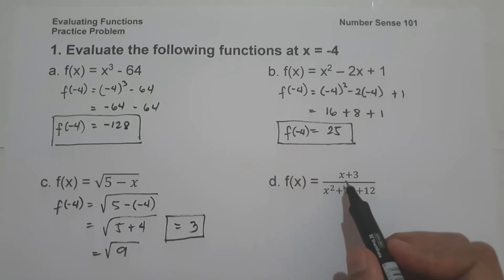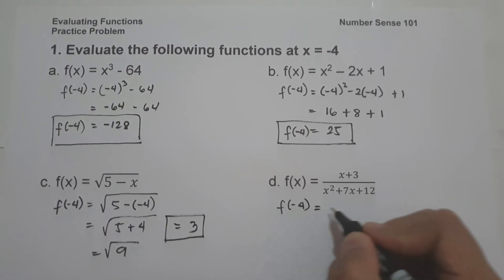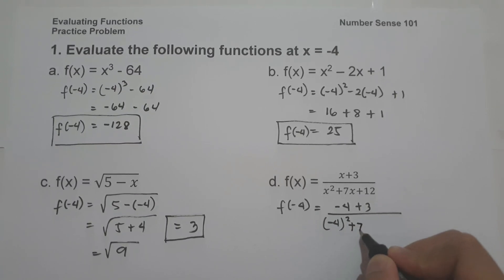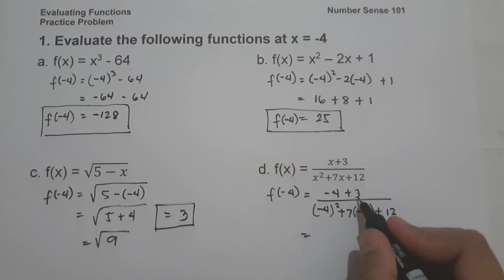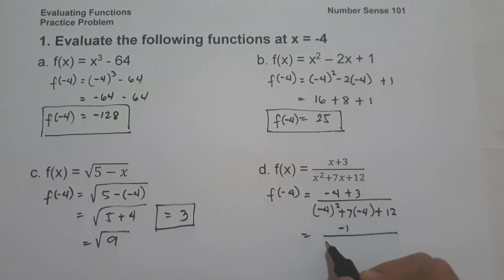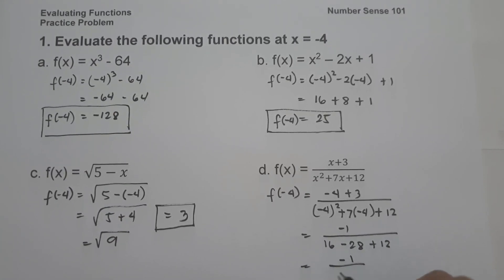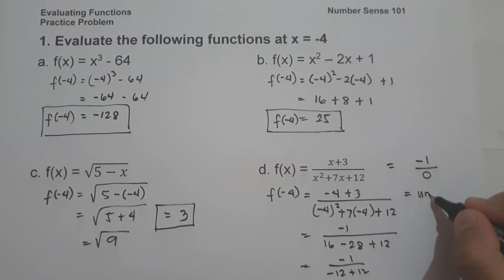On letter D, f of x is equal to x plus 3 all over x squared plus 7x plus 12. So f of negative 4 equals negative 4 plus 3 all over negative 4 squared plus 7 times negative 4 plus 12. Negative 4 plus 3 is negative 1; negative 4 squared is 16; 7 times negative 4 is negative 28 plus 12. So this gives negative 1 over 16 minus 28, that is negative 12, plus 12, which equals 0. So this is negative 1 over 0, and any number divided by 0 is undefined. Our answer here is undefined.